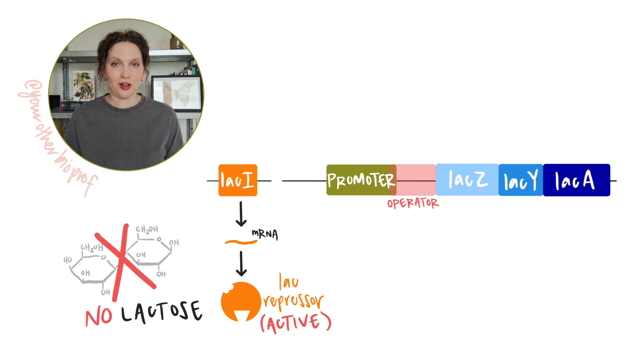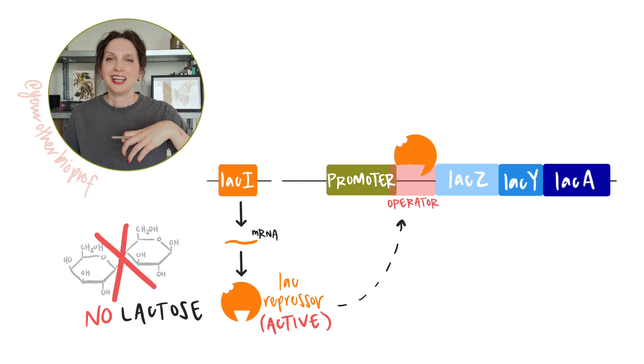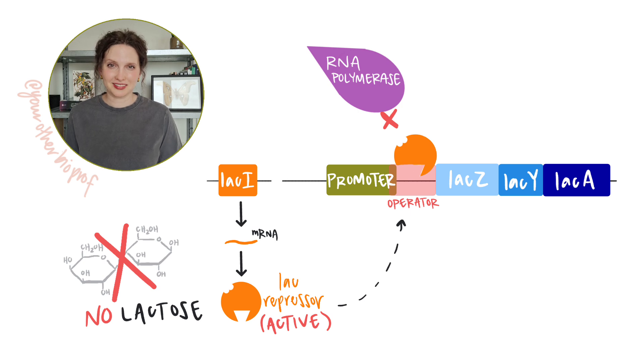Well, when there's no lactose available, our newly created and active lac repressor is going to bind to the operator sequence. Remember that the operator overlaps the promoter just a little bit so that when the repressor protein is bound to the operator, that's going to block RNA polymerase from being able to come in, bind to the promoter and initiate transcription. And that's kind of perfect because if there's no lactose to metabolize, does this cell really need to be making a bunch of product from the lactose metabolizing structural genes? There's no lactose to play with. There's nothing for them to do, so no need to waste a bunch of energy.